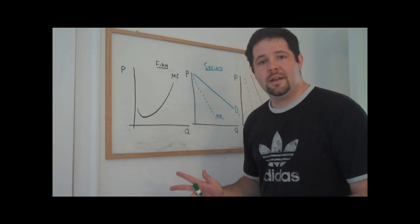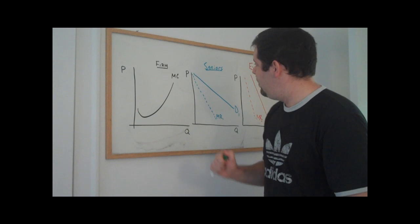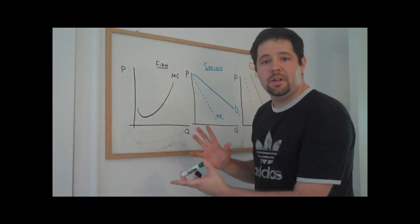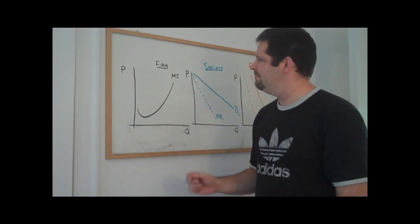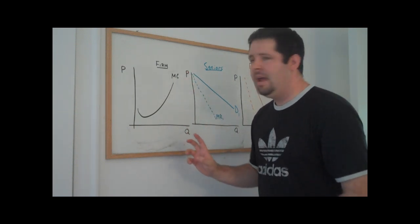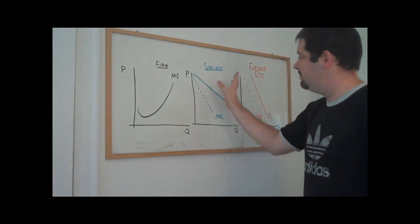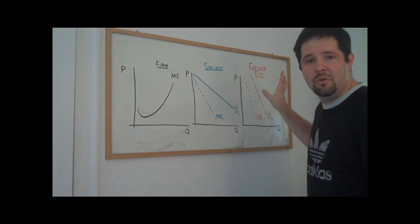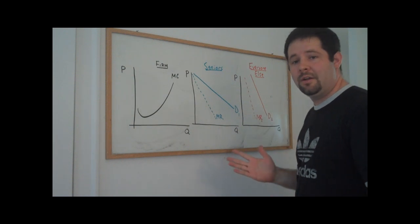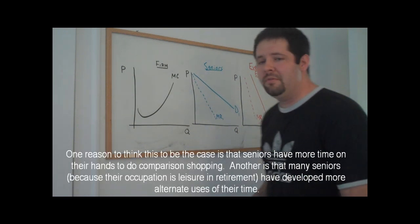Here's the setup. We have a firm with a marginal cost curve who faces two different market segments. Imagine that this is a firm that sells tickets to the movie theater, and it's facing two different segments of the market: seniors and everyone else. Seniors have a more elastic demand curve in this example, and everyone else has a more inelastic demand curve.